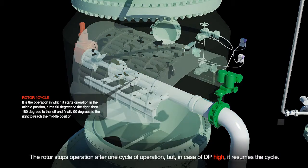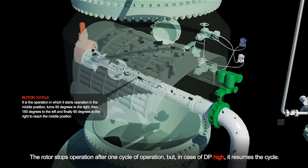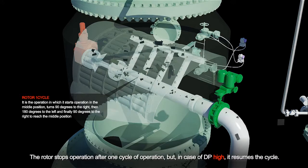The rotor stops operation after one cycle of operation, but in case of DP-high, it resumes the cycle.